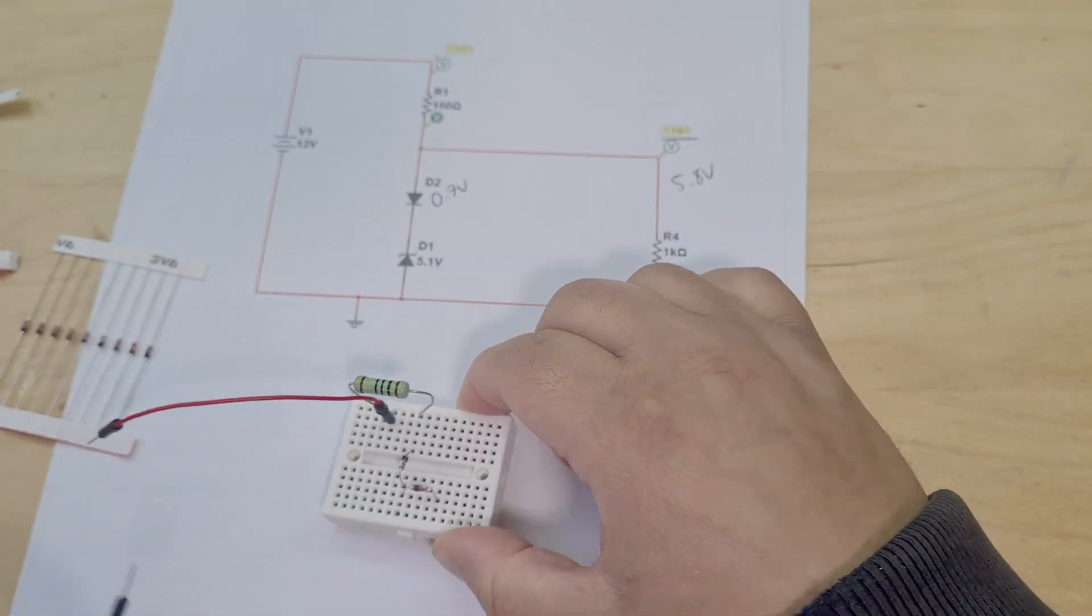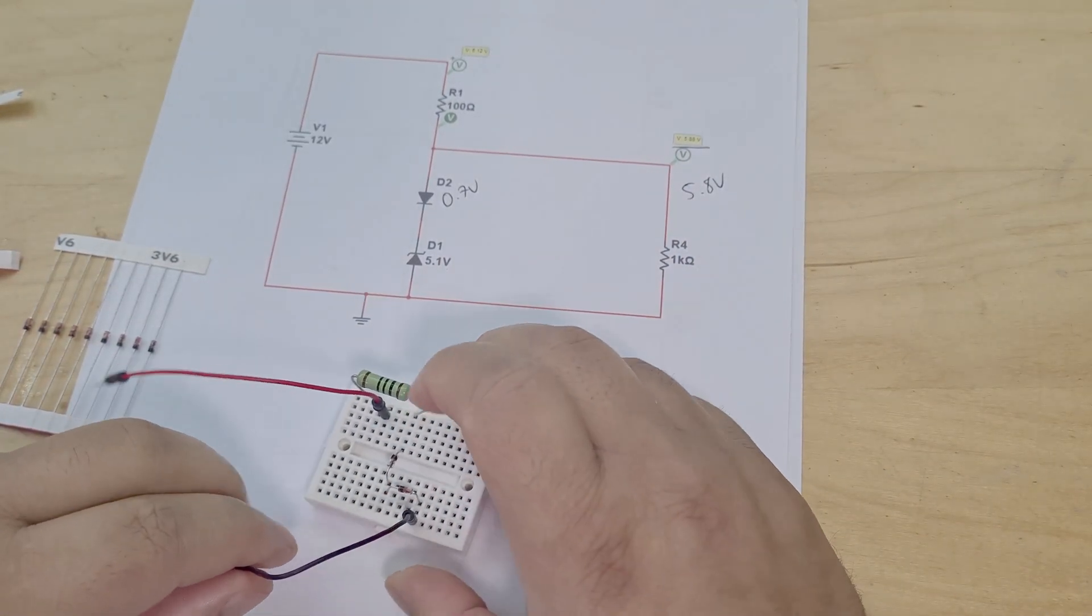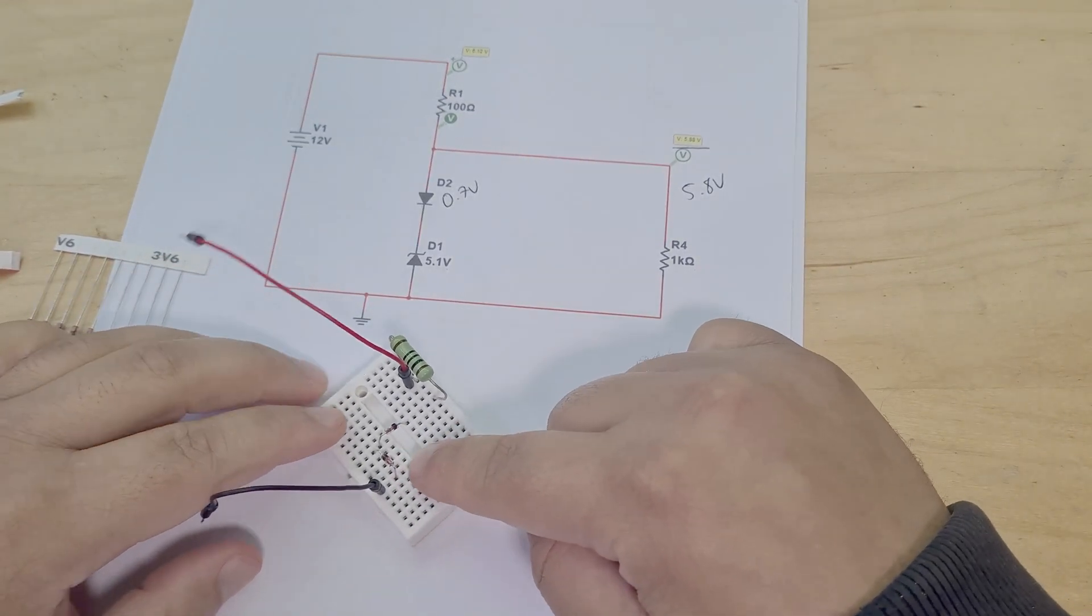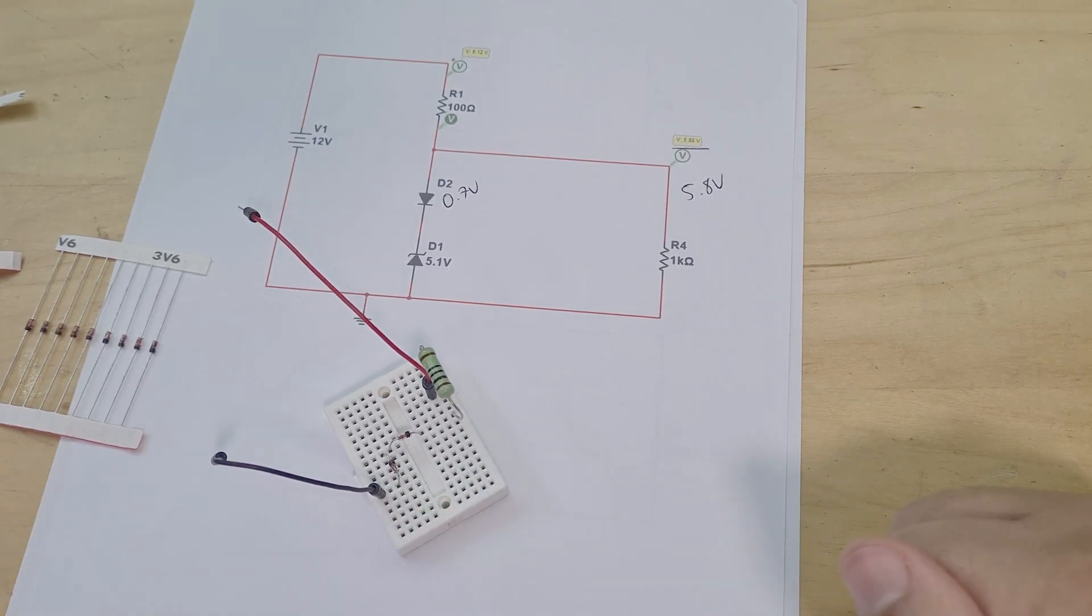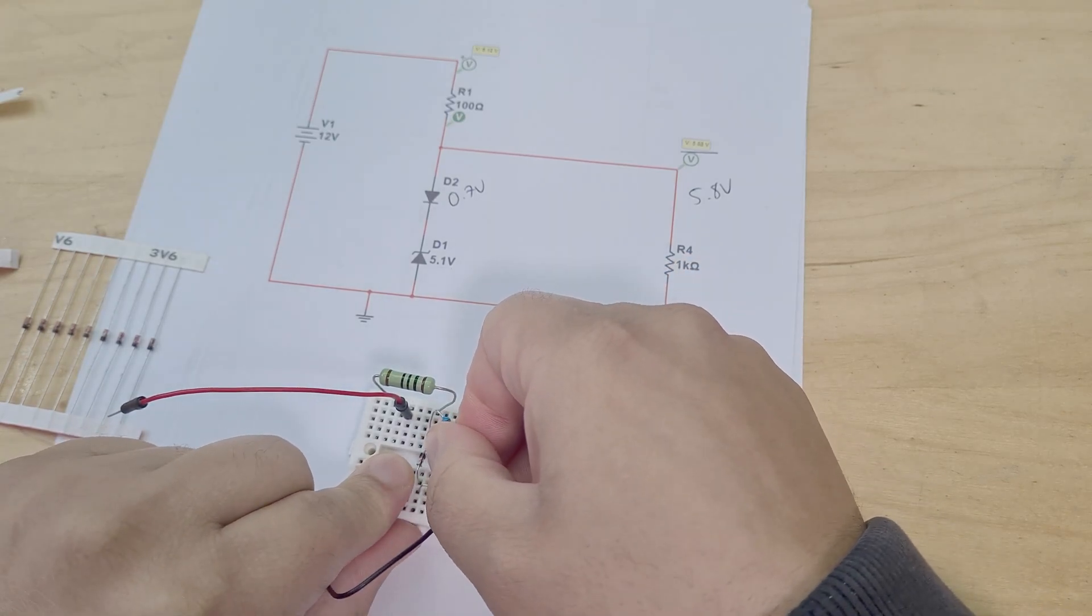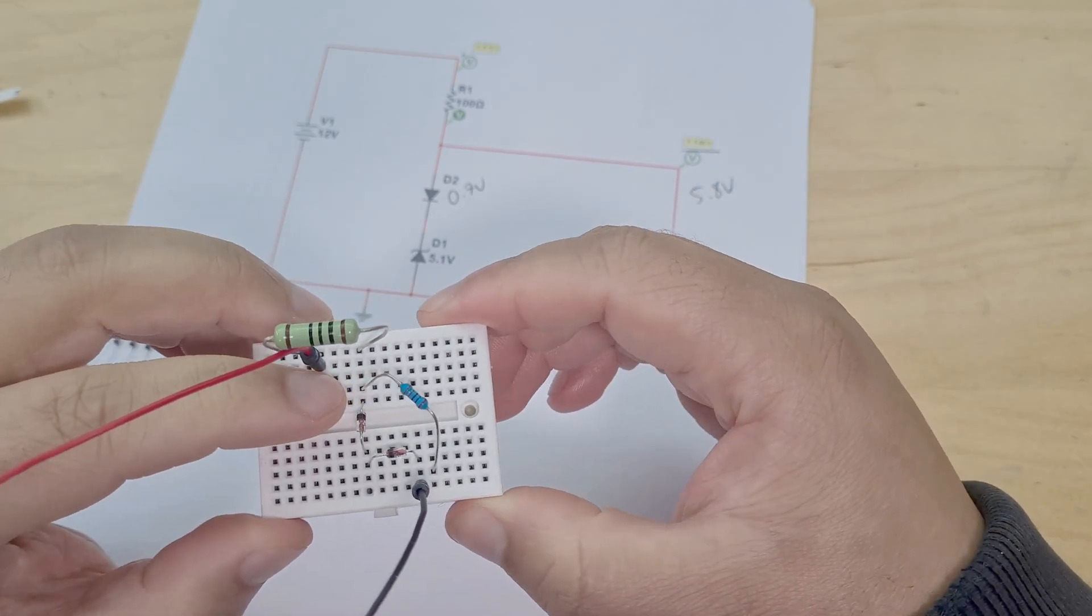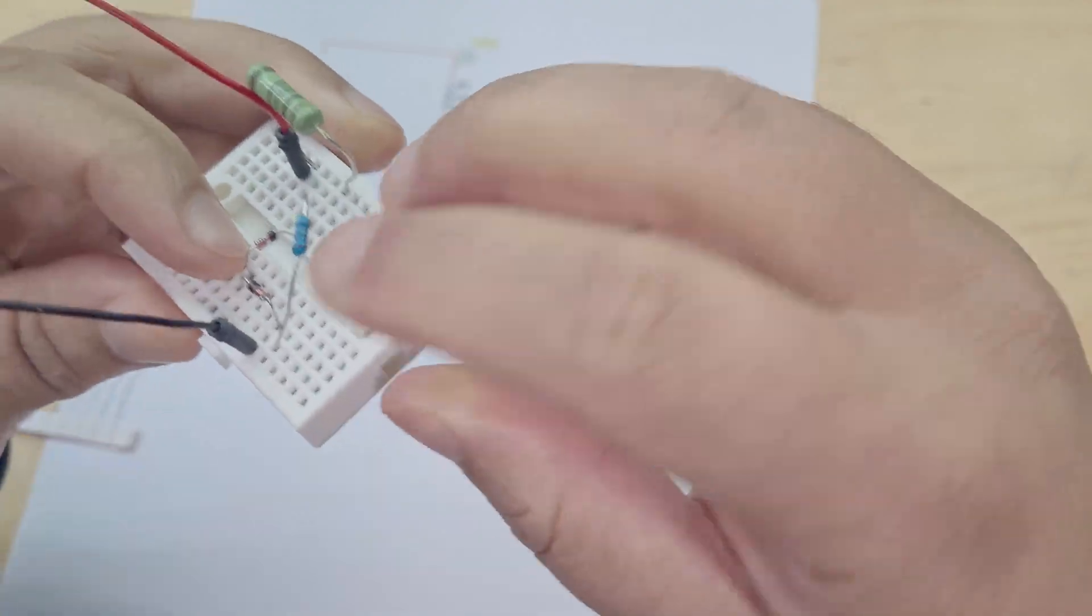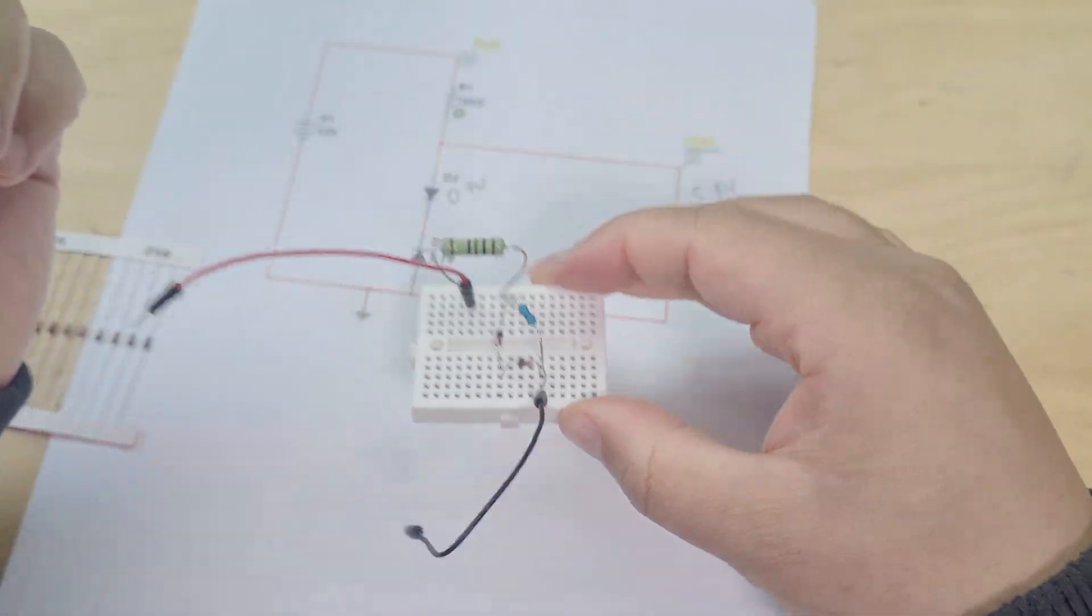So we need to stick these in series together. Alright, so these are both in series and then we just need to take our ground. And then now what we're going to do is we now need our output to be across both of these. We need it to be both across these two Zener diodes. So here's a 1k resistor and I just placed that across. Okay, there we go. So that resistor now is there across that Zener diode. Okay, there we go.